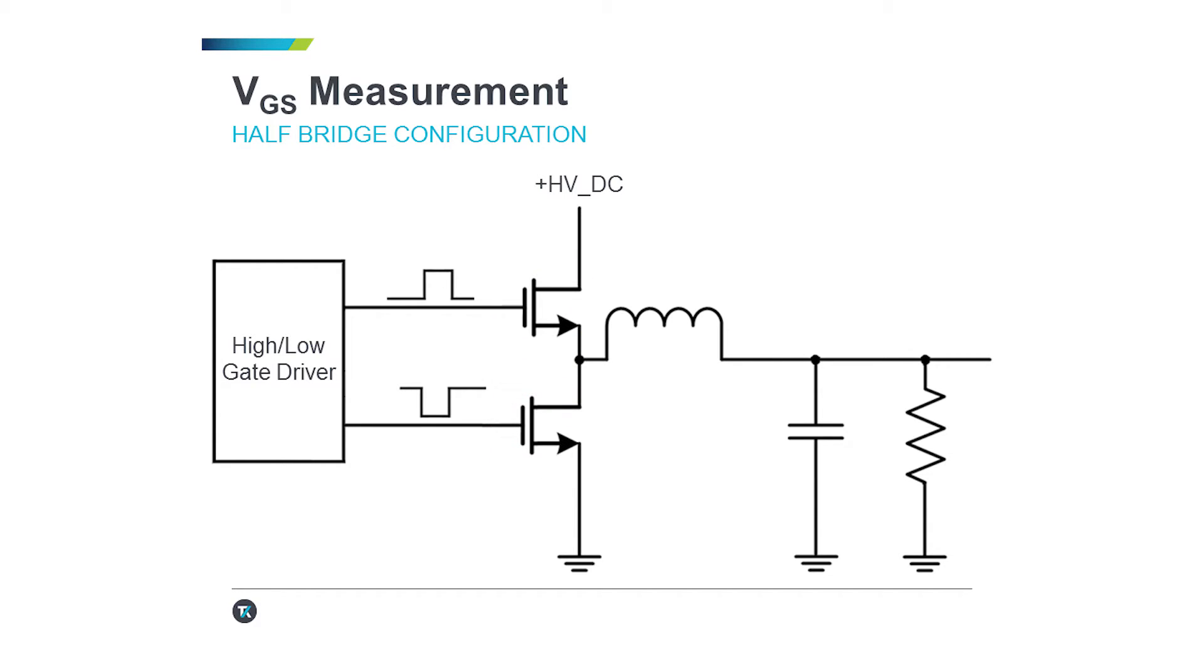The measurements that we're looking at are the high-side gate-to-source voltage and the low-side gate-source voltage. We also have a single-ended probe that's looking at the switch node by itself, reference to ground.